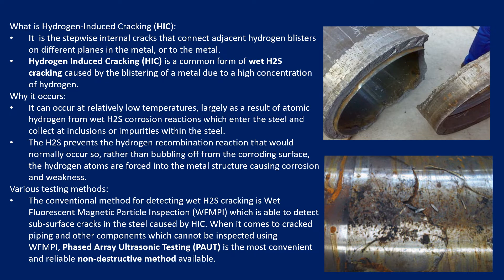H2S has the property of preventing the hydrogen recombination reaction, which means bubbling at the corroding surface occurs. The hydrogen atoms are forced into the metal structure, causing corrosion and weakness. Because H2S prevents the recombination reaction, it is the hydrogen atoms which are forced into the metal.